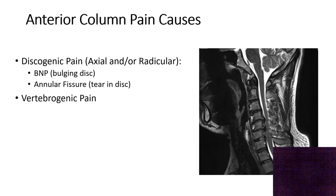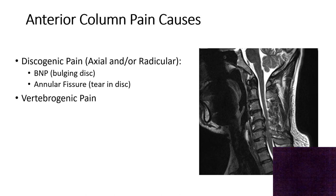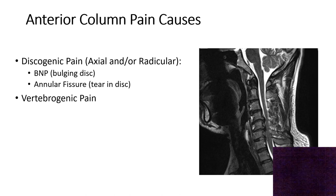Your anterior column is made largely of your vertebral bodies, which look like marshmallows, and the discs in between them. For the most part, anterior column pain in the neck is caused by degenerating discs. Those degenerating discs compress neural structures like your spinal cord or the sac around your cord and cause significant pain. It can also be caused by vertebrogenic pain, where disc material leaks into the bones and causes inflammation of the bones. For a deeper explanation, you can check out the other video on chronic low back pain.